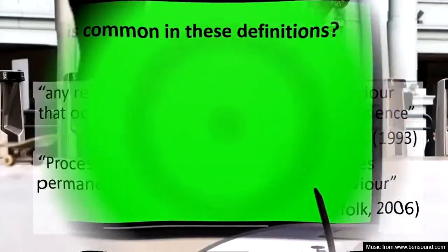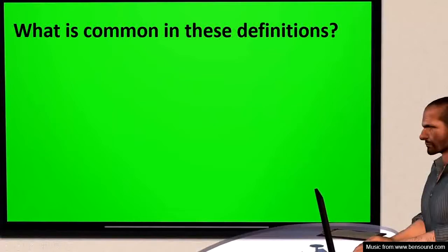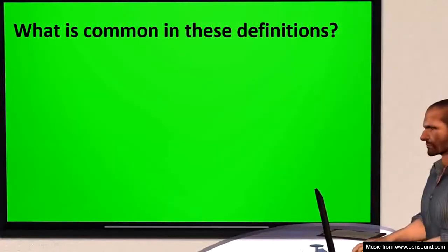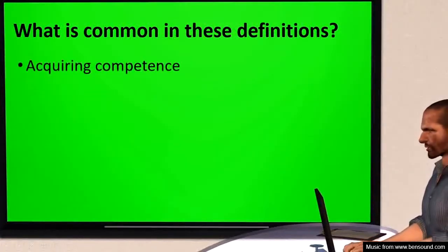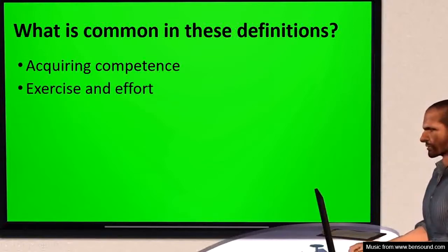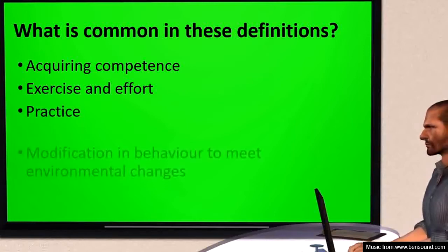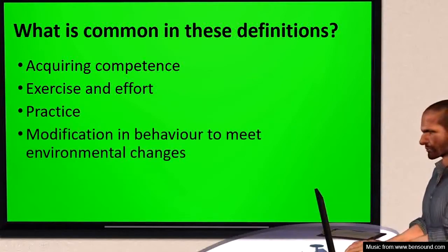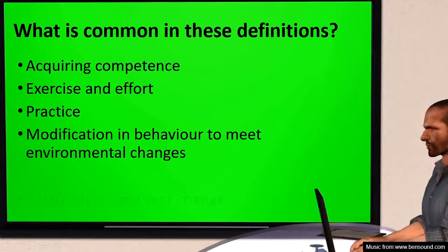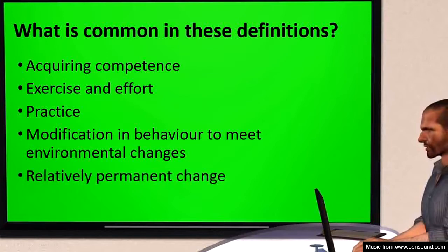When we analyze all these definitions — from Harlock to Woodworth to Morgan to Woolfolk — what is common? These definitions talk about acquiring competence, learning coming through exercise and effort, learning being an outcome of practice, modification in behavior to meet environmental changes, and learning being relatively permanent.